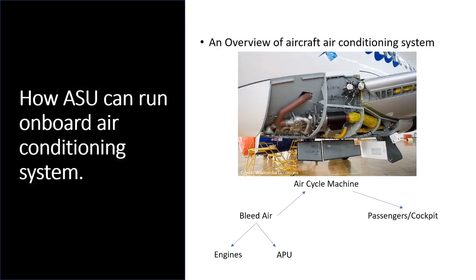Before concluding, recall that the air cycle machine runs the air conditioning system of an aircraft and operates on bleed air. Since ASU provides compressed air as an alternate to bleed air, it can also be used for running the onboard air conditioning system by allowing the air cycle machine to run on compressed air supplied by the ASU. With this, we conclude our discussion on ASU. See you in the next lecture.